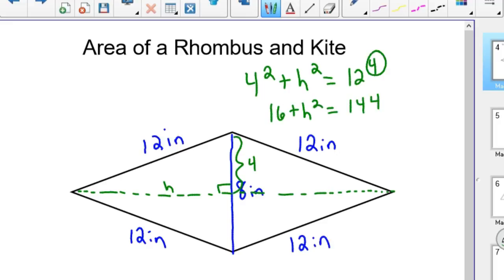So 4 squared plus h squared equals 12 squared. So 16 plus h squared equals 144. I'm not sure why I put it to the fourth power there, that should be squared. But anyway 4 squared plus h squared equals 12 squared, so 4 squared is 16, 12 squared is 144. Then you'd subtract the 16 from both sides, and h squared equals 128.